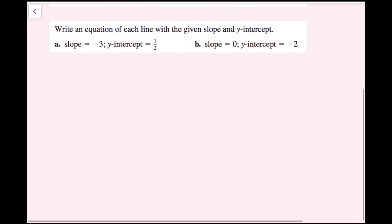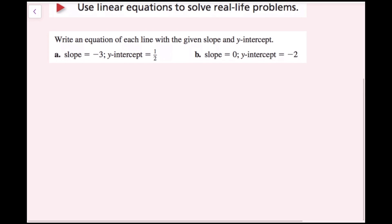So scrolling down to the first example: write an equation of each line with a given slope and y-intercept. When we see slope and y-intercept, this should remind us of slope-intercept form. Slope-intercept form is y equals mx plus b, where m is the slope and b is the y-intercept.